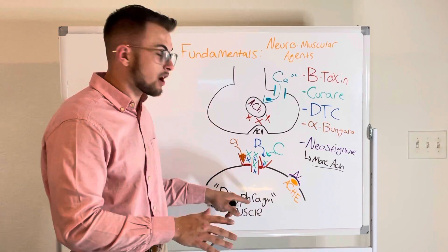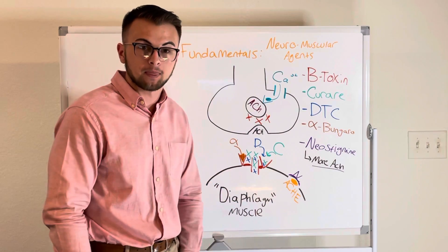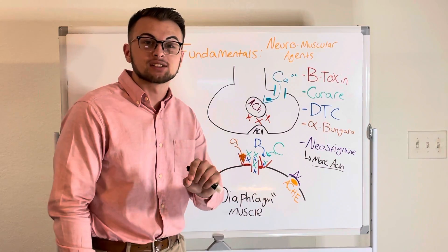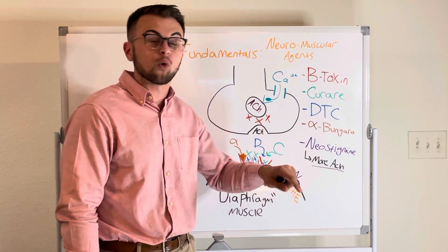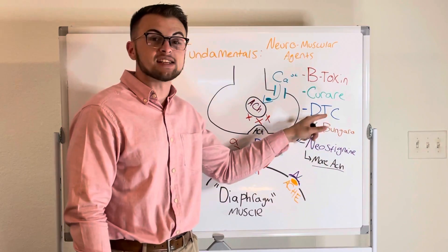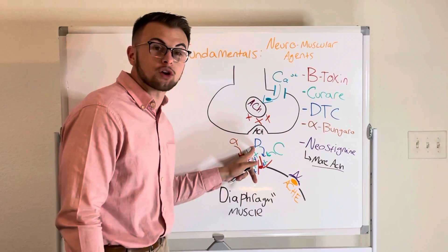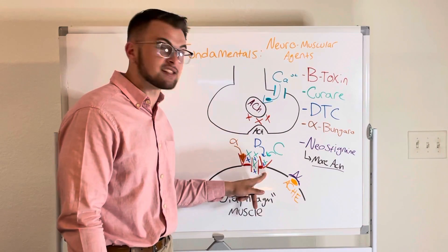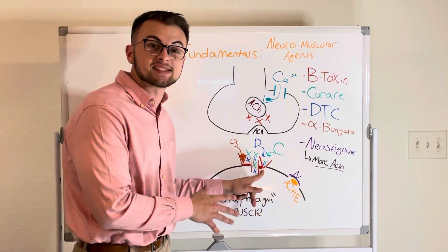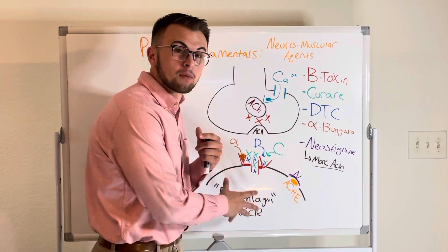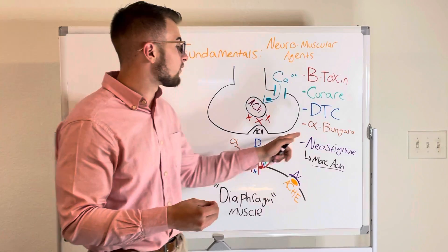The muscle fiber will not generate an action potential and contraction will cease to exist. Next we will look at d-tubocurarine, or DTC. This drug also competes for a spot at the nicotinic acetylcholine receptor and prevents depolarization in the muscle cell.